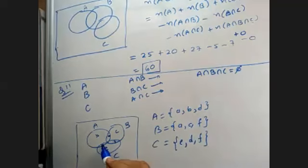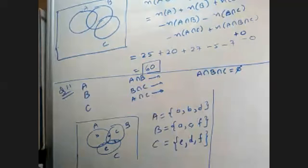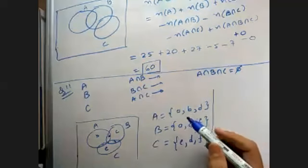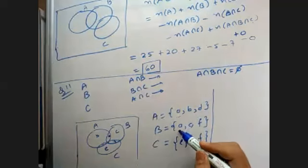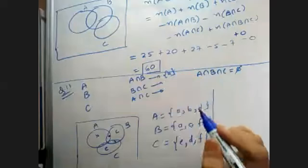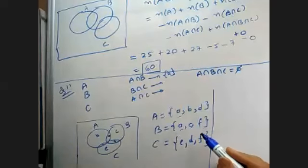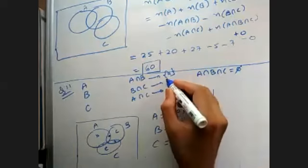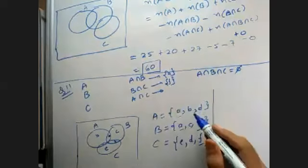So here is element B, and here is element F. A intersection B — the common element is only B. B and C common element is F. A and C common element is D.